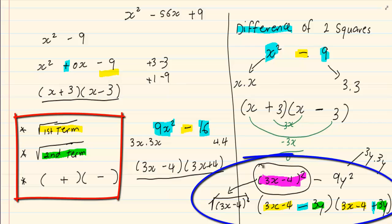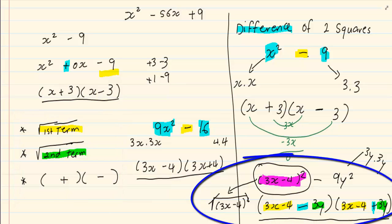3x minus 4 is 2 terms, but it is the root of the first term in the question. So your final answer is 3x minus 4 minus 3y, and 3x minus 4 plus 3y. Usually if the questions get more complicated you need to simplify inside if they are like terms.